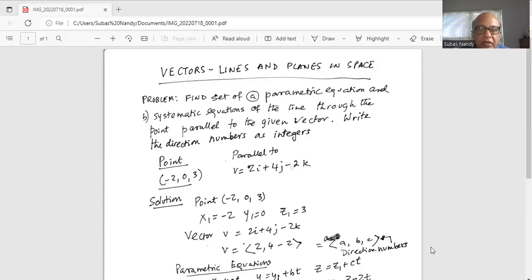Vector v given is 2i plus 4j minus 2k. Hence the directional numbers of the vector are two, four, and minus two.